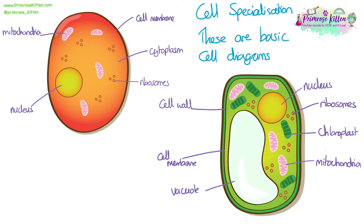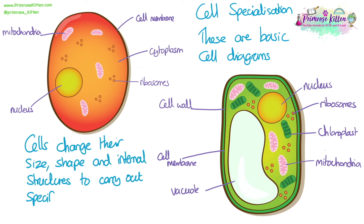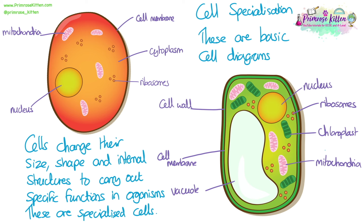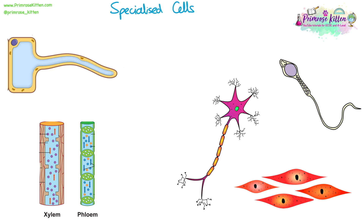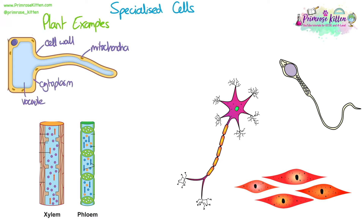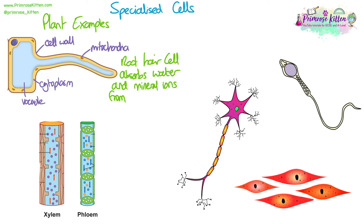These diagrams are very basic cell diagrams, but most cells don't look like this. Cells change their size, shape, and internal sub-cellular structures to carry out specific functions in organisms — these are known as specialised cells. Root hair cells are one example of plant specialised cells. You can see the structures we labelled on a basic plant cell, but there are some differences: no chloroplasts and an elongated shape. All of this helps the root hair cell carry out its function, which is to absorb water and mineral ions from the soil.